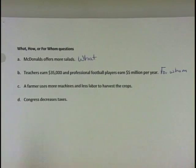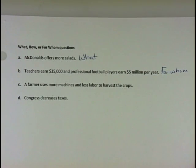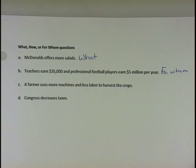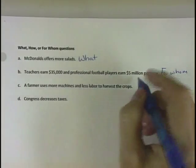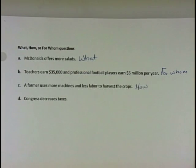The next one says a farmer uses more machines and less labor to harvest their crops. So instead of using people to harvest their crops, they're using machines or capital. This one would be a 'how' question — how are they producing it? They're using more machines and less labor.